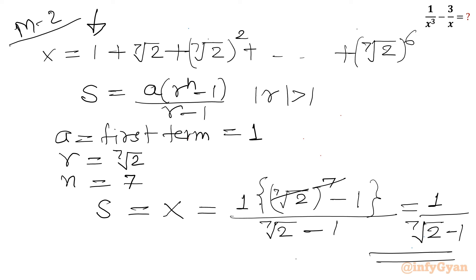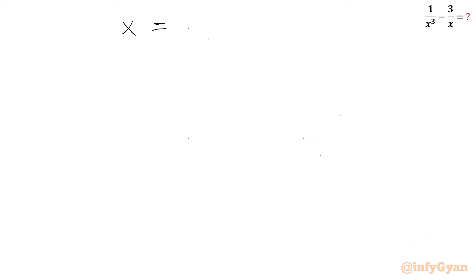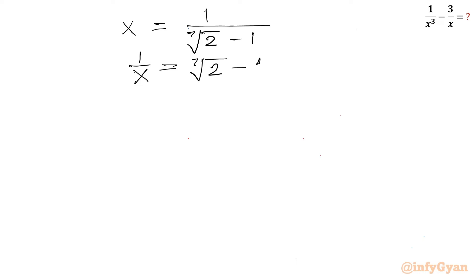Now the sum is ready. Now we have to evaluate our expression: 1 over x³ minus 3 over x. We have x equals 1 over (⁷√2 minus 1). Taking reciprocal of both sides: 1/x equals ⁷√2 minus 1. Adding 1 to both sides: 1/x plus 1 equals ⁷√2.